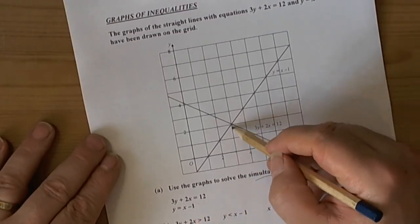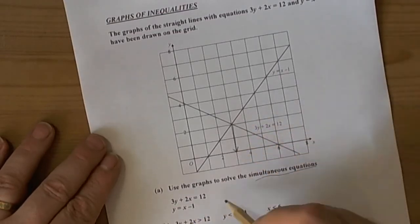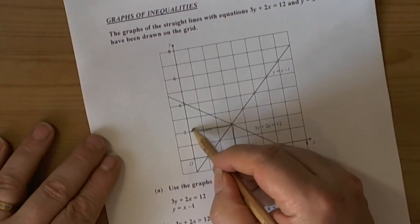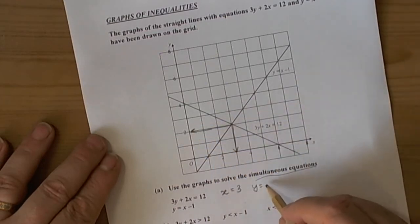We can see from the graph that the x value where the two lines cross is 3, and the y value is 2.